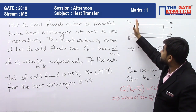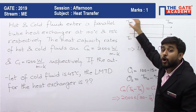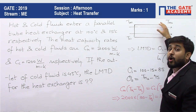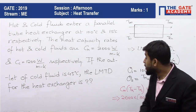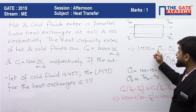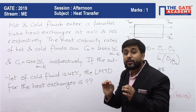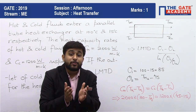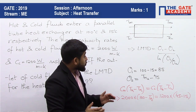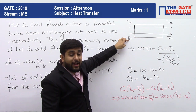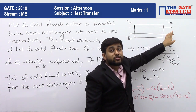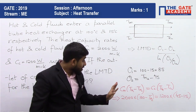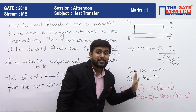Considering the side where the hot fluid enters as side 1 and where it exits as side 2, we write LMTD as (θ1 − θ2) / ln(θ1 / θ2). Here θ1 is the temperature difference between hot and cold fluid at side 1, so θ1 = TH1 − TC1, and θ2 = TH2 − TC2. For us, θ1 = 100 − 15 = 85°C, and θ2 = TH2 − 45, which is still unknown.